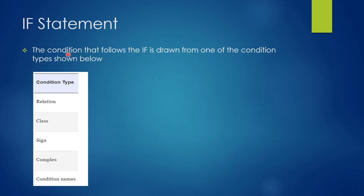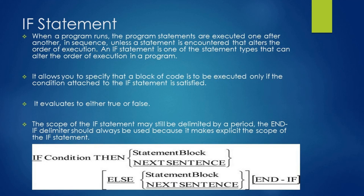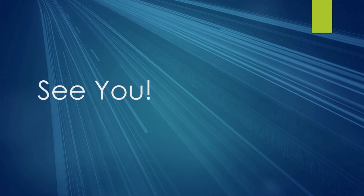The condition after the if statement can be of any of the following types: first is relation, second is class, third is sign, fourth is complex, and fifth is condition names. We will look into these condition types in upcoming lessons. With this we have reached the end of this lesson. I hope it has given you a fair idea about the if statement. Keep practicing — see you in the next lesson.